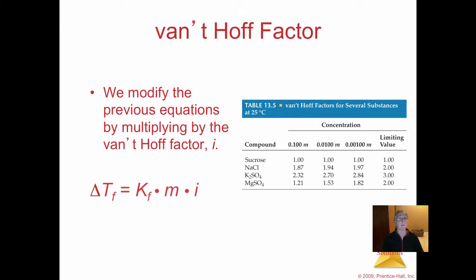Some of you might have happy memories of our ice cream lab from last year. We did the same sort of calculations — we used rock salt and the freezing point depression equation, but we had to multiply it by two because one mole of salt gives us two moles of ions. Colligative properties are only dependent upon the number of particles in solution, not necessarily the identity.